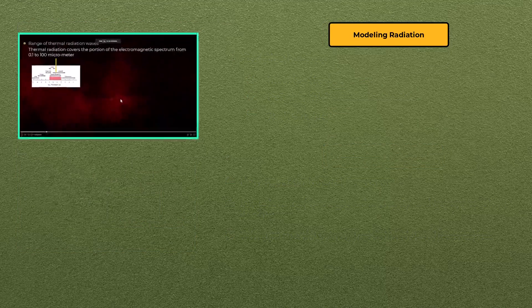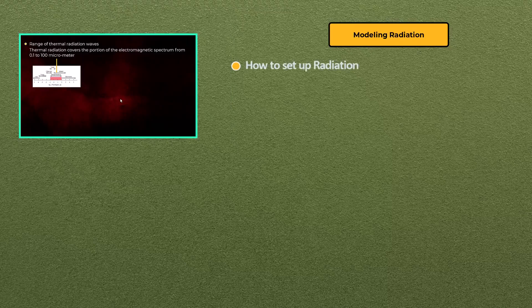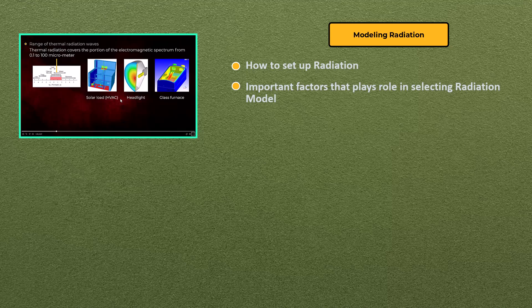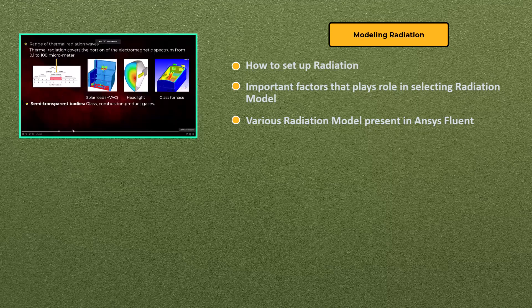In lesson 5, the focus will be on understanding how to simulate radiation, what factors play a role in choosing a radiation model, and the various radiation models available in ANSYS Fluent.